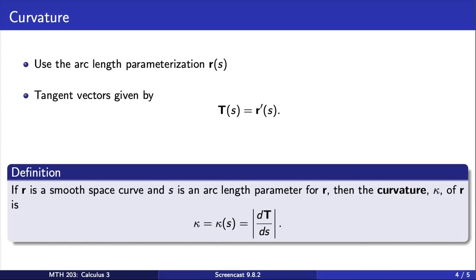If r is a smooth space curve and s is the arc length parameter for r, then the curvature, kappa of r, is given by the magnitude of the derivative of capital T.